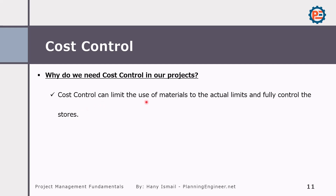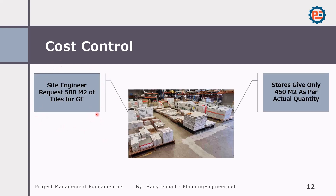Cost control can also limit the use of materials to the actual limits and fully control the stores. For example, a site engineer might ask for 500 square meters of tiles for the ground floor of a certain building. But if the project is performing cost control and there is good communication between the cost control department and the store department, the store can issue only 450 square meters — because the actual quantity for the ground floor is only 450 square meters — proactively preventing material wastage.